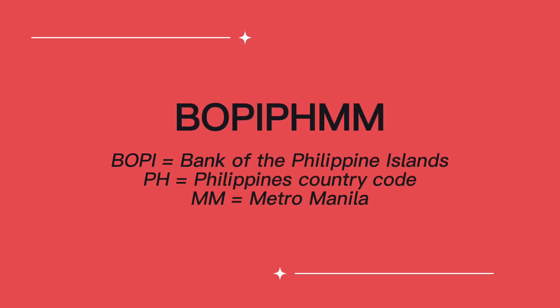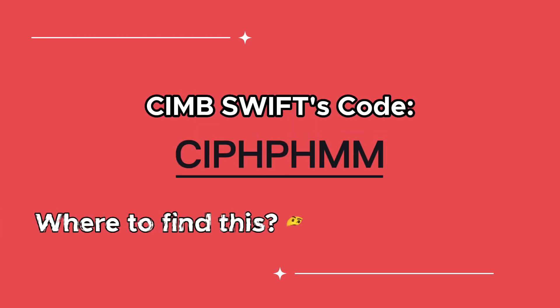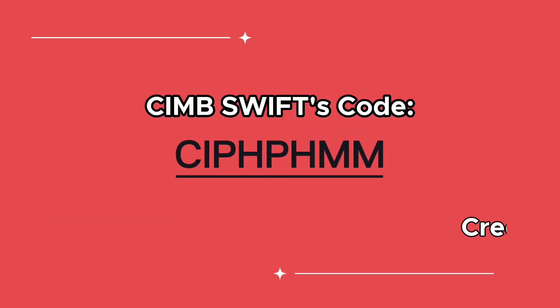Taking a BPI SWIFT code as an example, CIMB's SWIFT code on the other hand is this. Where did I find this?